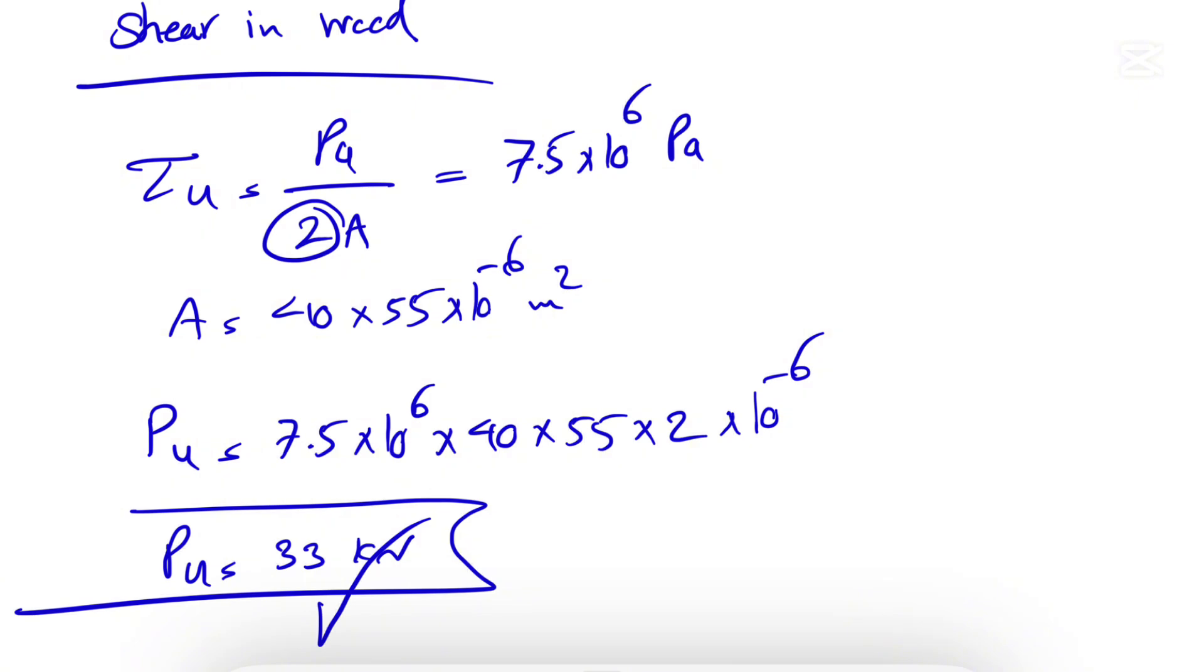7.5 times 10^6 times 40 times 55 times 2. Keep in mind we have two of those rectangles. We have the 10^-6. Let's see what we get from here.